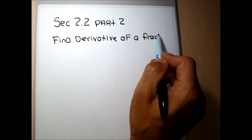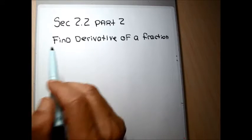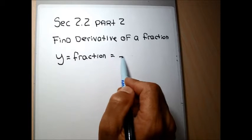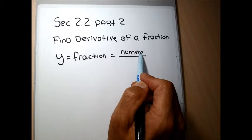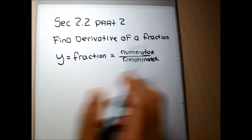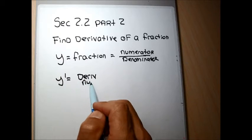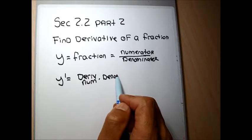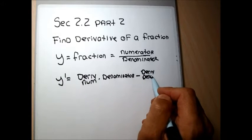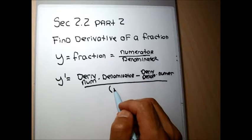There are a problem or two towards the end of this section that we might skip — I'll tell you when we get to them because they're really messy and not terribly important. If we say y equals some fraction with a numerator and a denominator, then y prime equals the derivative of the numerator times the denominator, minus the derivative of the denominator times the numerator, all over the denominator squared.